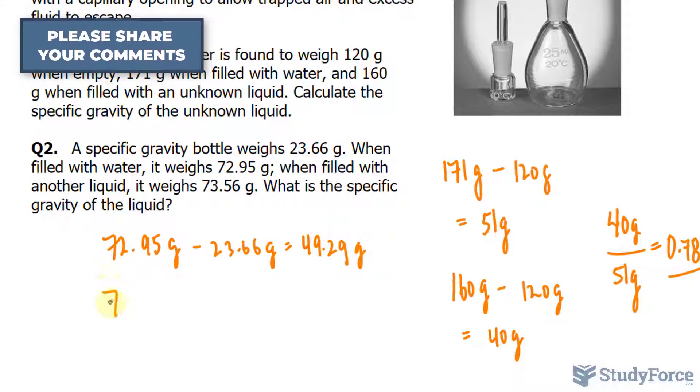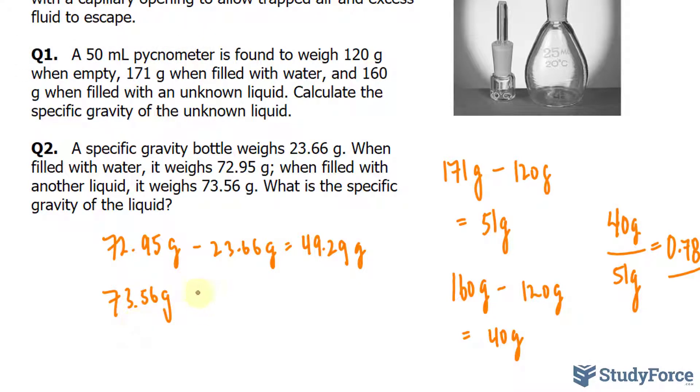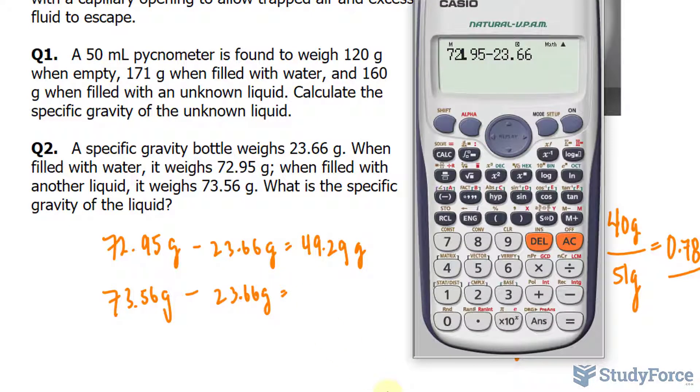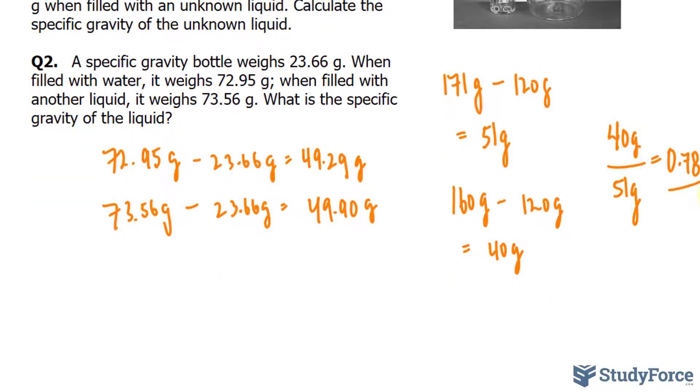Again, we'll do 73.56 grams. That's the mass with the substance, and the weight of the bottle is 23.66 grams. So let's modify our value here, where it's 73.56, and we end up with 49.90 grams. Notice the extra zero that I added to take into account significant figures.